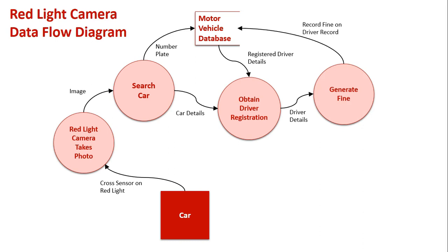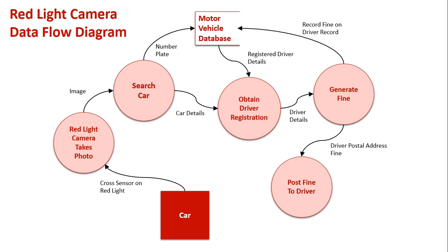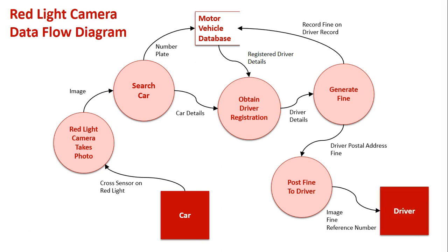The fine then gets recorded back in the database — that the driver has received a fine, and if demerit points are going to be taken off their license, that all needs to be recorded in the database. We use all this information gathered to find the driver's postal address, and then we post the actual fine to the driver. At the end of all this, the driver gets posted the fine, which has an image of the car going over the red light, the fine amount, whether they're going to lose demerit points, and their reference number.